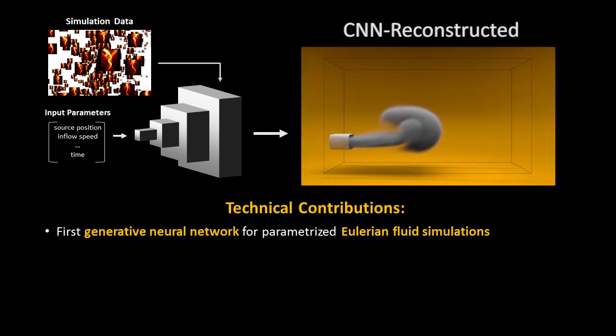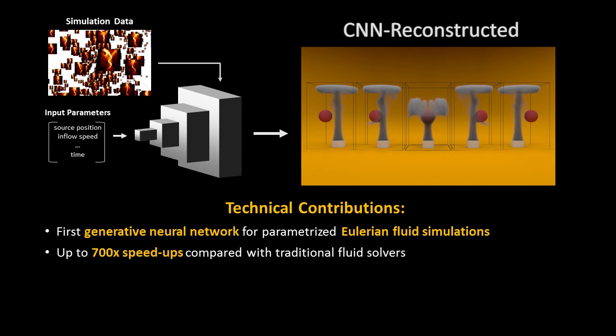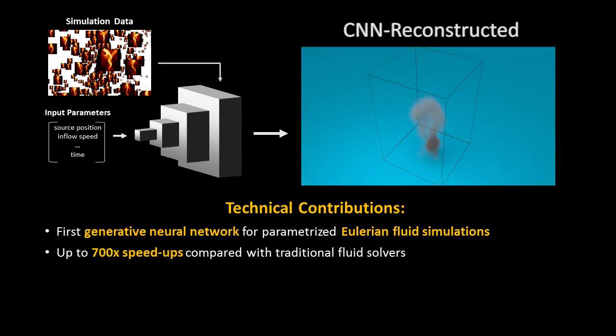In this paper, we propose the first generative neural network that fully constructs fluid simulation velocities from a set of reduced parameters. We are able to achieve up to 700 times performance speedups when compared with traditional fluid solvers.